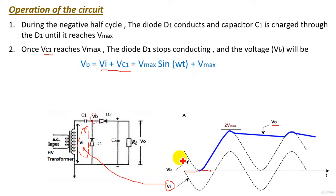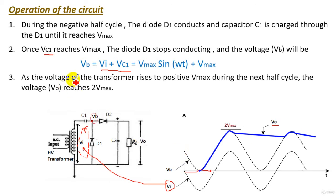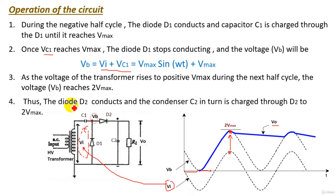As the voltage of the transformer rises to positive V_maximum during the next half cycle, V_B at that point equals 2·V_maximum, since it is shifted from V_input by positive V_maximum. The voltage V_B at this moment is 2·V_maximum. Then diode D2 conducts, acting as a short circuit, and capacitor C2 is charged through D2. The output voltage waveform reaches 2·V_maximum, so this circuit successfully produces a DC voltage double that of half wave or full wave rectifier circuits.